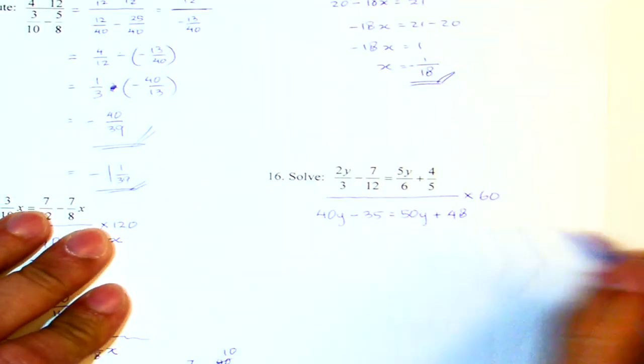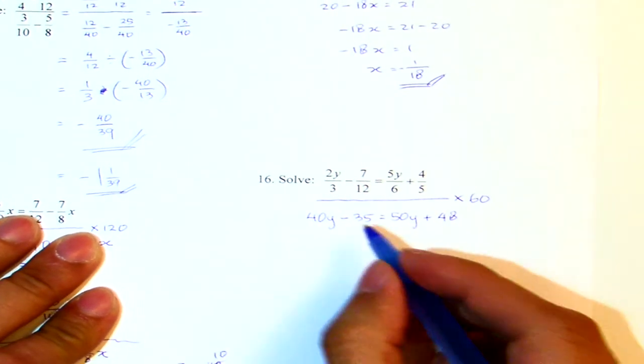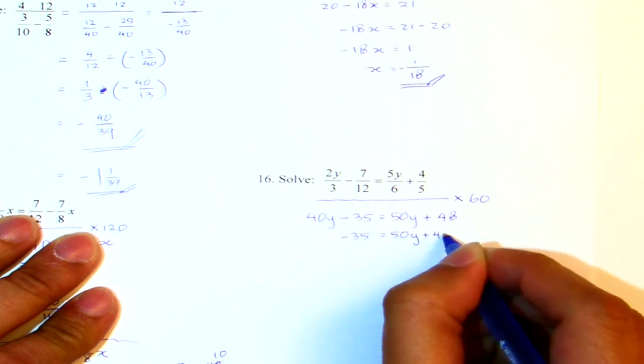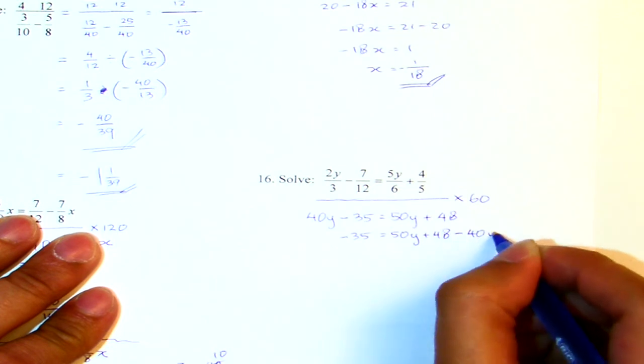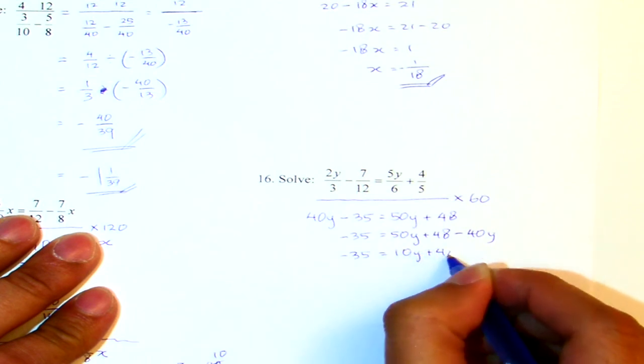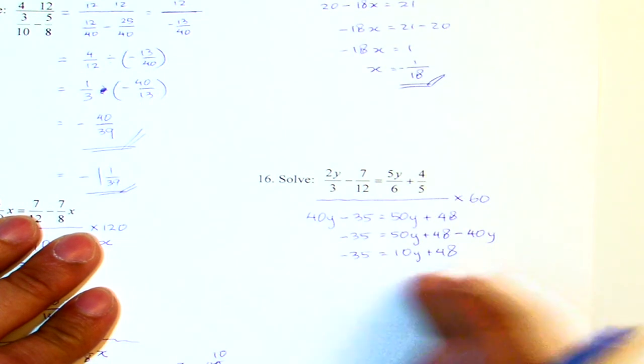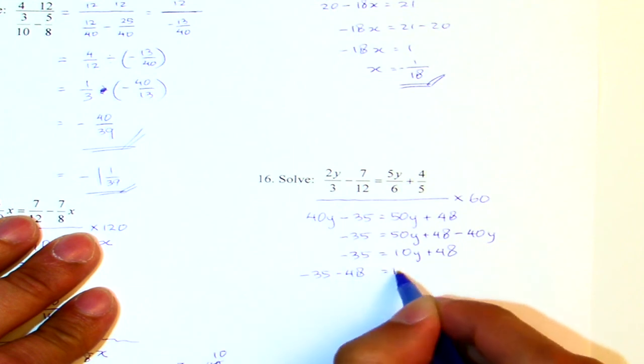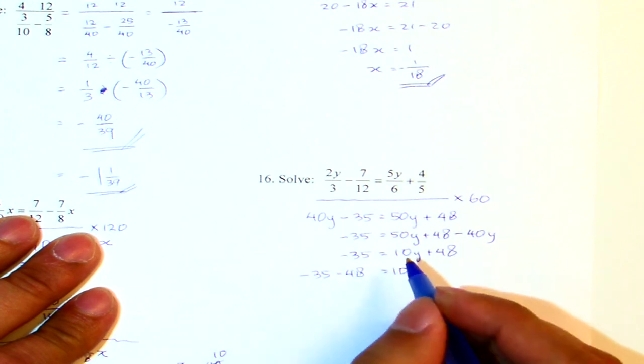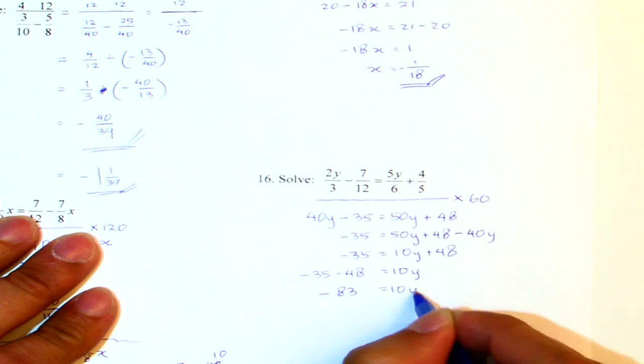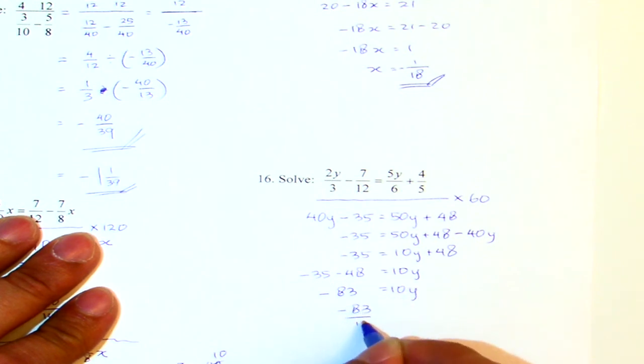Now, then from here, we start moving things around. Which one I will move first? I think I will move the 40y first. So negative 35 equals to 50y plus 48 minus 40y. I'm combining the y terms there. And then I will next move the 48 to the left-hand side. And then when I compute that, I will get negative 83 equals to 10y. And finally, I divide by 10. I don't think I can reduce it, so I will leave it like that. That's for number 16.